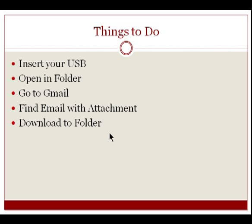First of all, what do you need to do? You need to insert your USB in your computer, open the folder, go to your Gmail, find the email with the attachment you want to download, and then download it to a folder. By now you might be thinking you don't know how to do two or three of those steps, or probably all of them, but don't worry — here I'm going to show you what's going on.